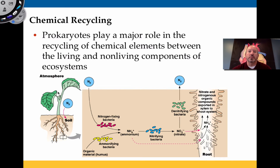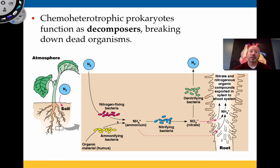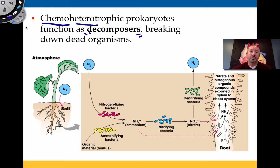These so-called chemoheterotrophs are our decomposers, breaking down dead organisms. It's basically the link between when something dies and the new life that comes as a result of it, because death really opens the door for the opportunity of new life. Prokaryotes are the link between the dead and the new life — I can't think of anything more important than that.